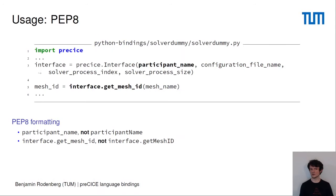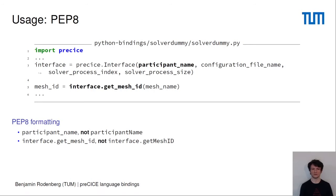Let's see how to actually use the Python bindings. Like any Python package, you start by importing it: import precise. Then you call API functions that are very similar to the C++ interface. One thing to be aware of is that we use PEP8, the common standard for formatting Python code. This means, as you can see in the third line of the code example, we don't write participant_name in camelCase but with underscores. The same holds for function calls — so instead of getMeshID in camelCase, we use underscores between the words.